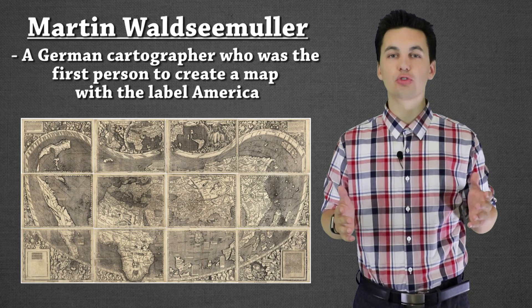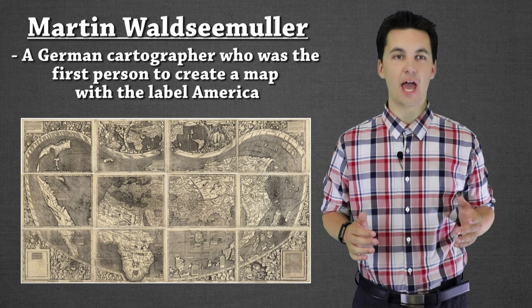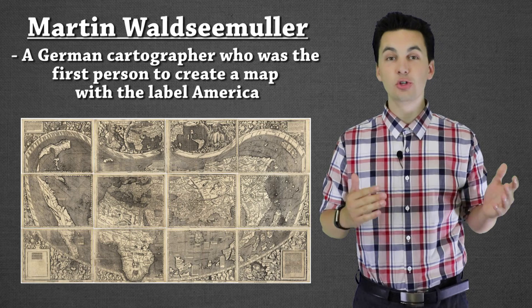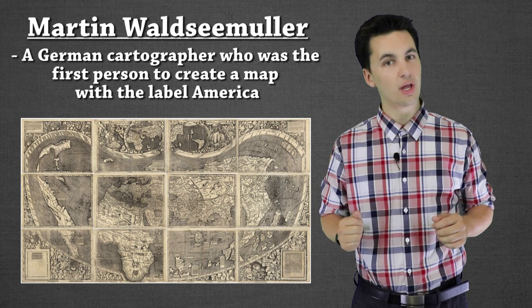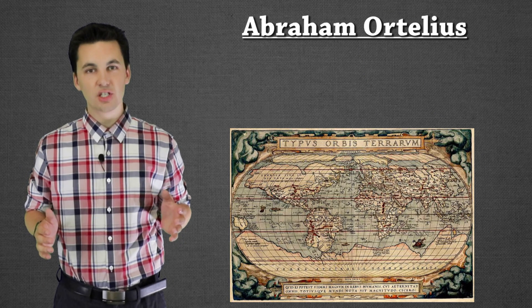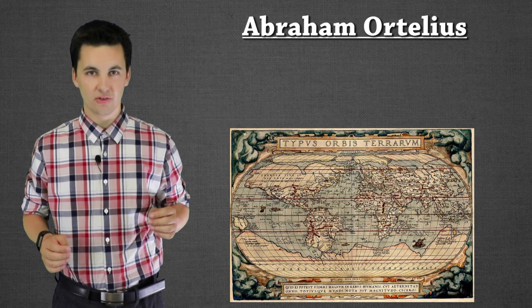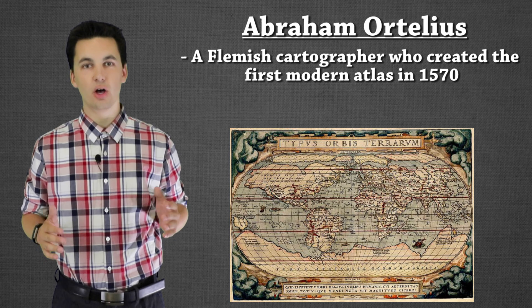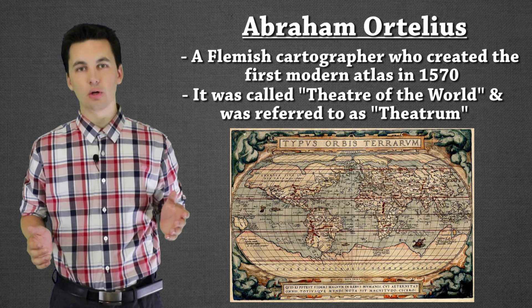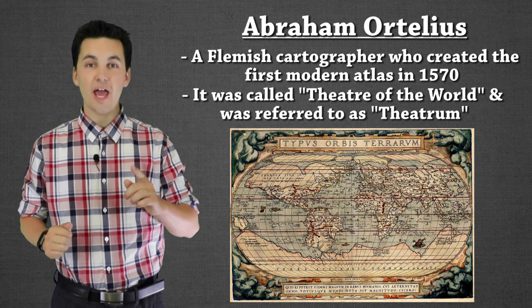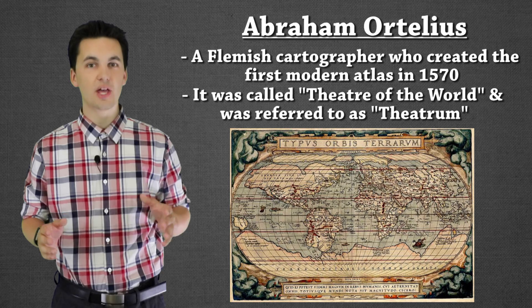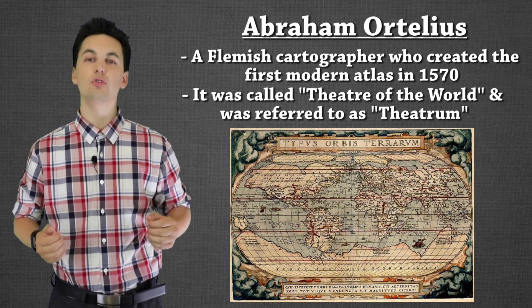As more of the world got discovered, we had Martin Walsamer, a German cartographer who is credited with being one of the first people to actually label America on the map. So the new world started to be discovered, and maps were now getting even bigger as more of the world became known. In 1570 we have Abraham Ortelius, who created the first modern atlas of the world, known as the Theater of the World or the Theatrium. We start to see the world being explored, and maps were producing new information never known before.